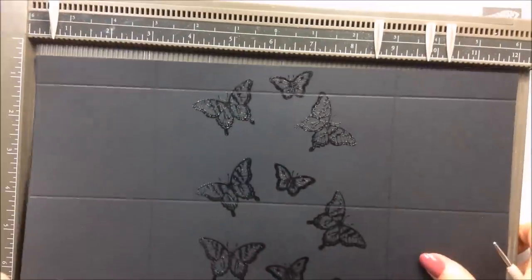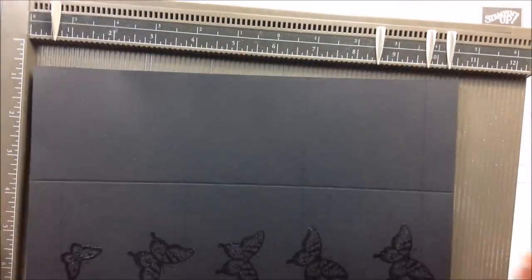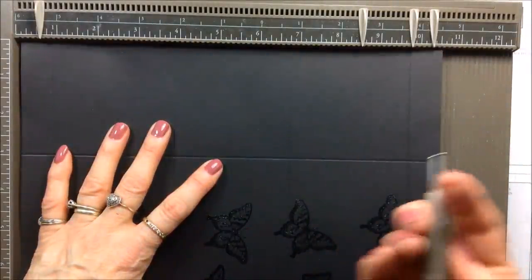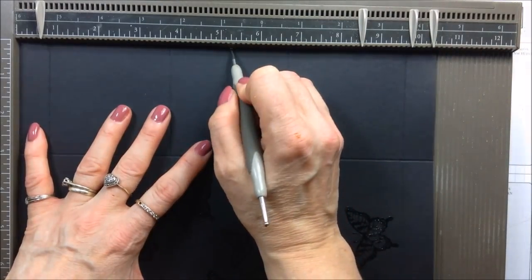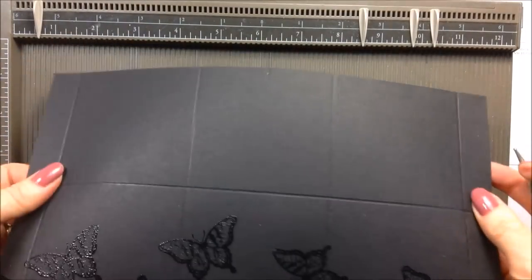Whilst you've got your card there, put it back in with the side that measures ten and a half inches and just make yourself a notch at five and a quarter inches there. Flip your card over and do exactly the same on the other side like that.